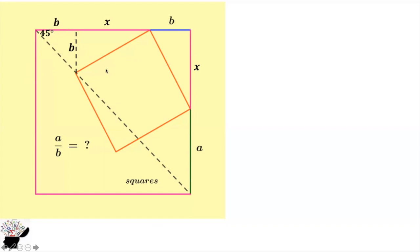Now we know that the square has all the sides equal. So the side here is equal to the side also here. So we can say that B plus X plus B is equal to X plus A.